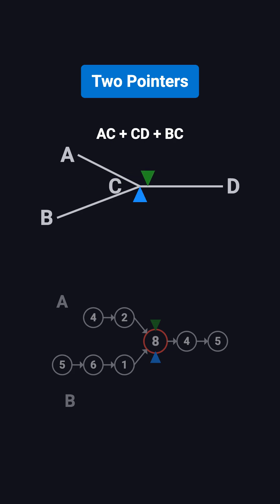Pointer pB walks BC, then CD, then AC, and also ends up at C. Its total distance is BC plus CD plus AC. So both pointers travel exactly the same distance, which guarantees they meet at the intersection point C.